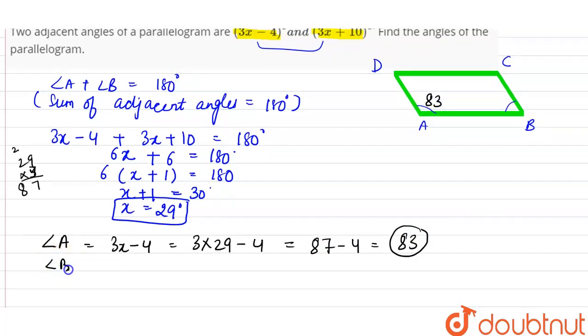Then we can say angle B is equal to 3x + 10. So 3x + 10 means 3 into 29 plus 10. 3 into 29 is 87, so 87 plus 10 is equal to 97. So angle B is equal to 97.